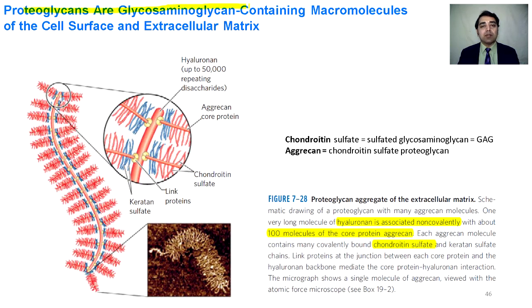One example of a proteoglycan has a backbone of hyaluronan containing almost 50,000 disaccharide repeating units. This structure, called aggrecan, is a protein in nature. The aggrecan is attached with chondroitin sulfate and keratan sulfate. This protein base is attached non-covalently to the hyaluronan through link proteins.